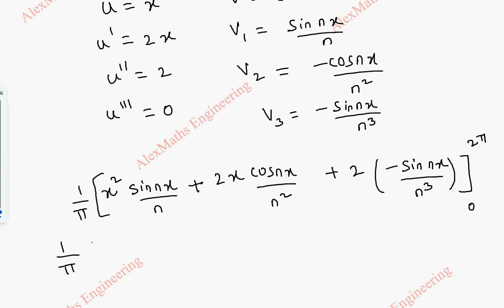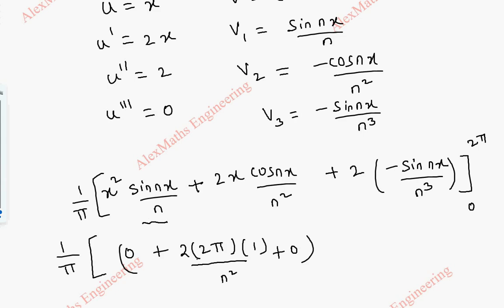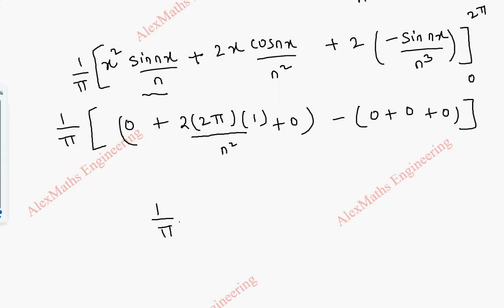So, 1 by π — when I take the upper limit 2π, the sin 2nπ term is 0. The second term is 2 times 2π, cos 2nπ is 1, divided by n squared. Again the sin 2nπ term is 0. Coming to the lower limit, the first term has x so it is 0, second term also has x so it is 0, and the sin 0 term is 0. So everything is 0. We have 1 by π times 4π by n squared. After cancelling, we are left with aₙ equal to 4 by n squared.